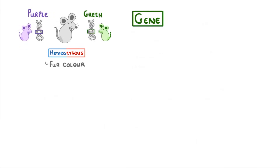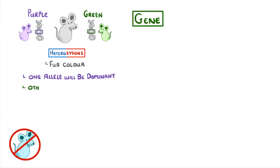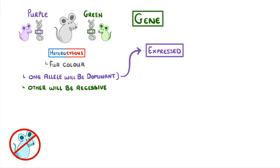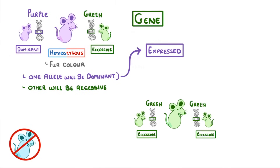This brings a bit of a problem, though. Say we had a mouse that was heterozygous for fur colour, with one allele coding for purple fur and the other for green fur — what colour would our mouse be? Well, it's not going to be a mix of the two. Instead, one of the alleles will be dominant and the other one will be recessive, and it's always the dominant one that gets expressed. So if the purple allele was dominant to the green allele — which would make that green allele recessive — then our heterozygous mouse would be purple. This means that the only way to have a green mouse is if both of its alleles were for green fur, which we would call homozygous recessive. On the other hand, the purple allele will always be expressed when it's present, regardless of whether the mouse is heterozygous or homozygous for the purple allele.